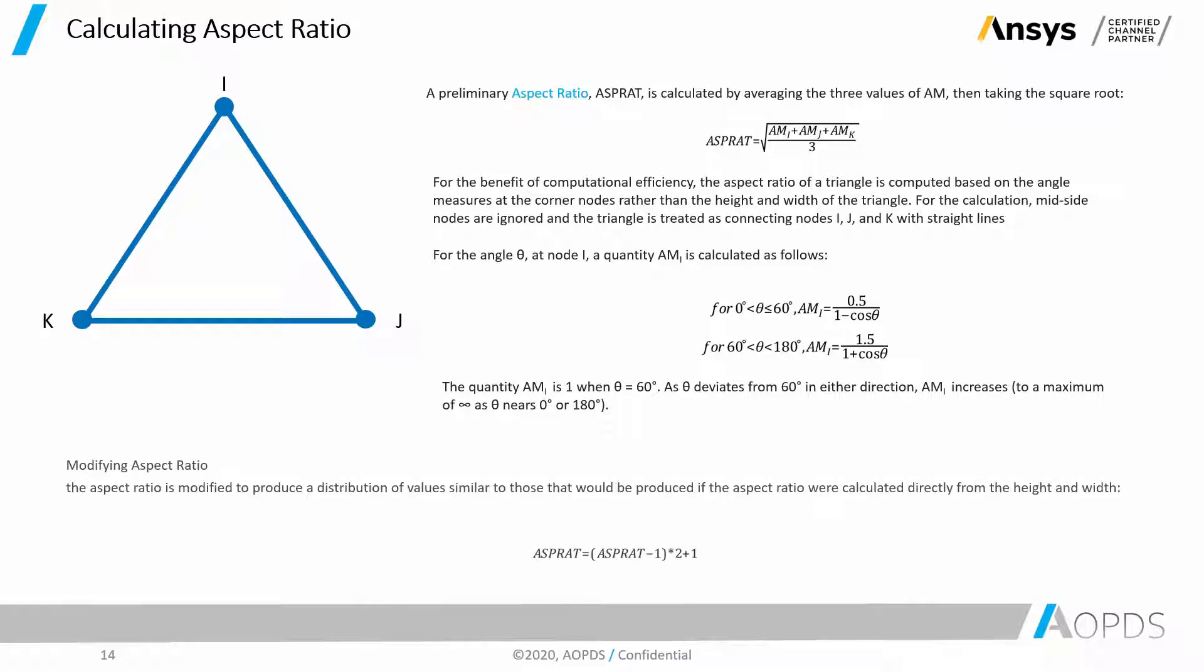We have another value called the modified aspect ratio. The aspect ratio is modified to produce a distribution of values similar to those that would be produced if the aspect ratio were calculated directly from the height and width. And that is aspect ratio minus 1 multiplied by 2 plus 1, which gives us this modified aspect ratio.